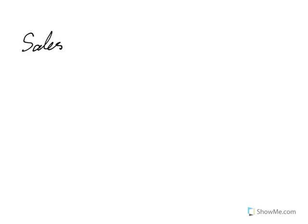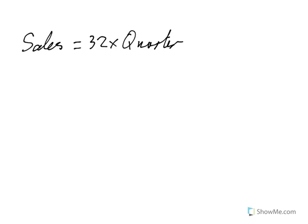When you've done that and looked at the YouTube video on the website, what you end up with is that sales equals 32 times whichever quarter we're looking at plus 838. The 'quarter' here refers to the time code we're using.